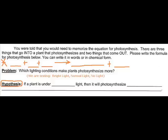The problem we're going to be investigating in this lab is which lighting conditions make plants photosynthesize more. We are going to be studying bright lights, normal room lights, and no light. Before you start your lab you need to make a hypothesis — choose one of the lighting conditions and explain how you think the plant will photosynthesize. For example: if a plant is under no light, then it will photosynthesize very quickly and very efficiently. Make up your own hypothesis please — do not copy mine.